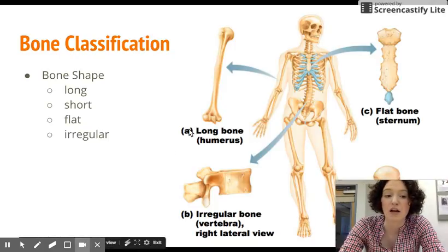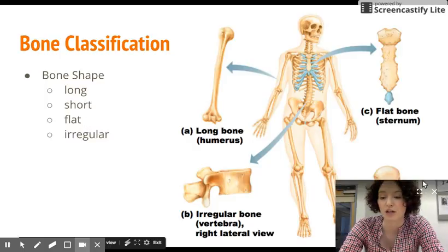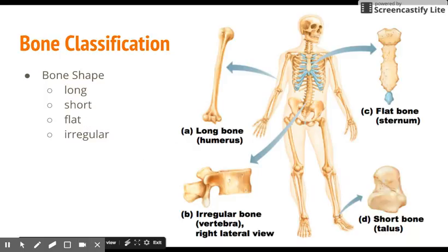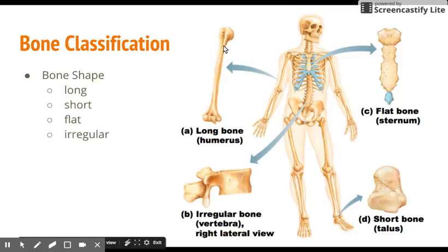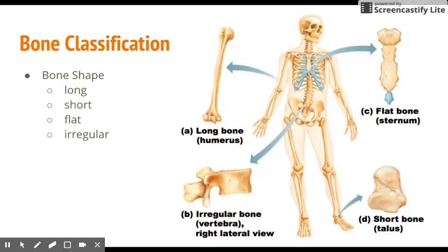Bones can be classified by shape — they can be long, short, flat, or irregular. Long bones are typically longer than they are wide, as seen with the humerus. They generally have a shaft in the middle and two heads at either end, and are mostly made of compact bone. Almost all the bones of your limbs are long bones, with the exception of wrist and ankle bones and your kneecap.